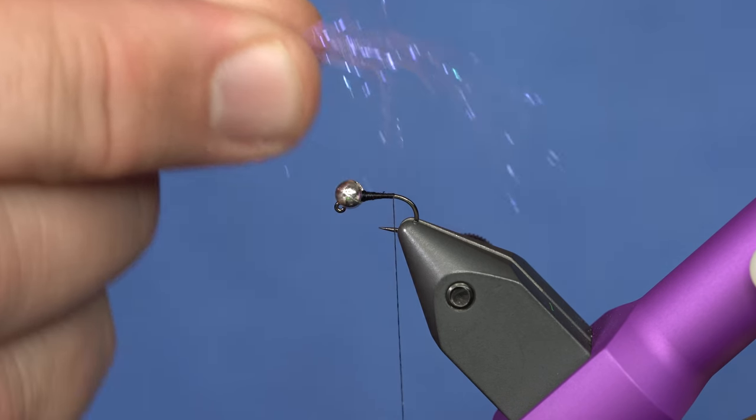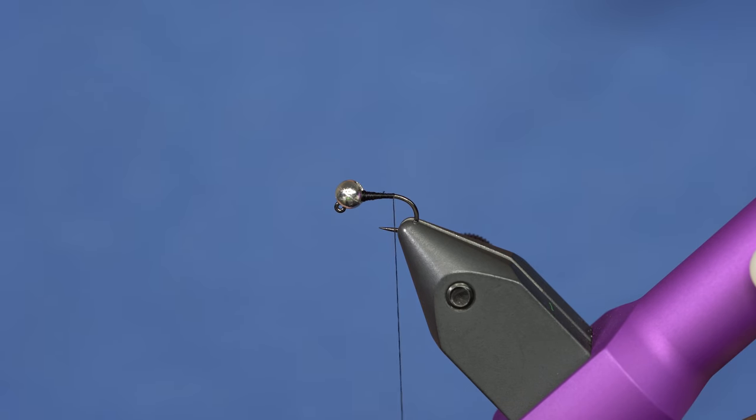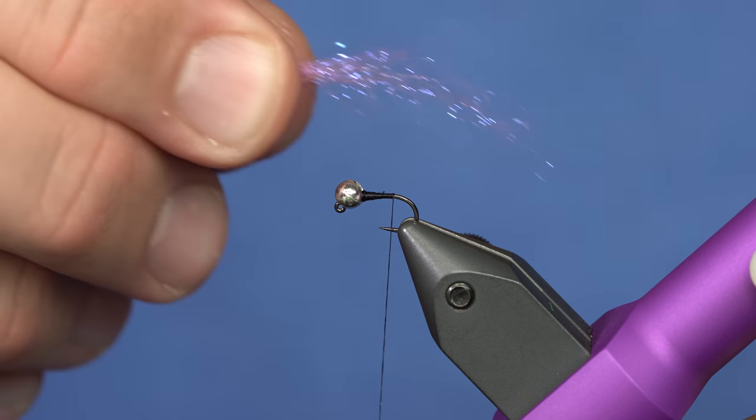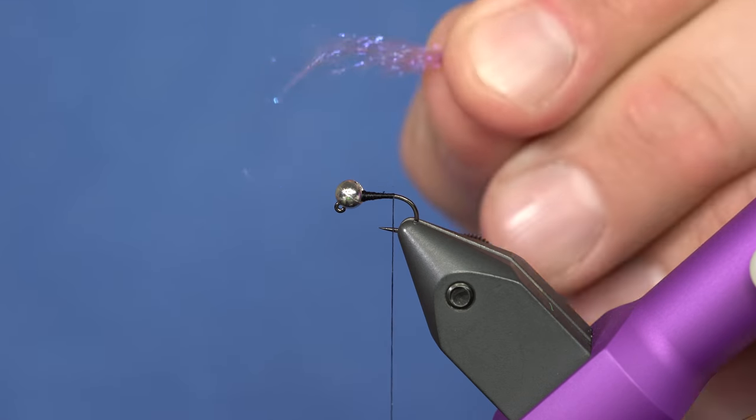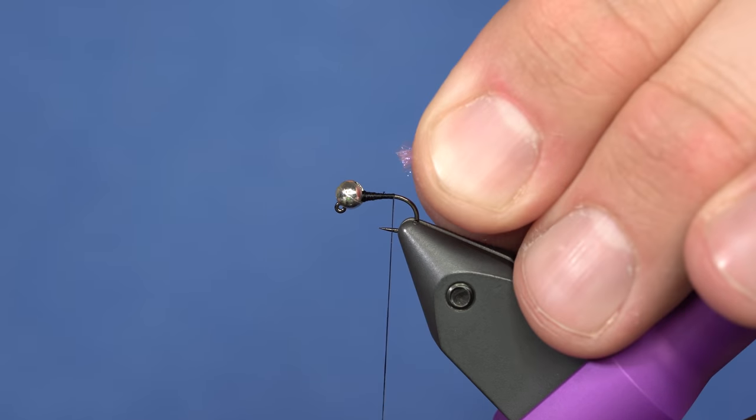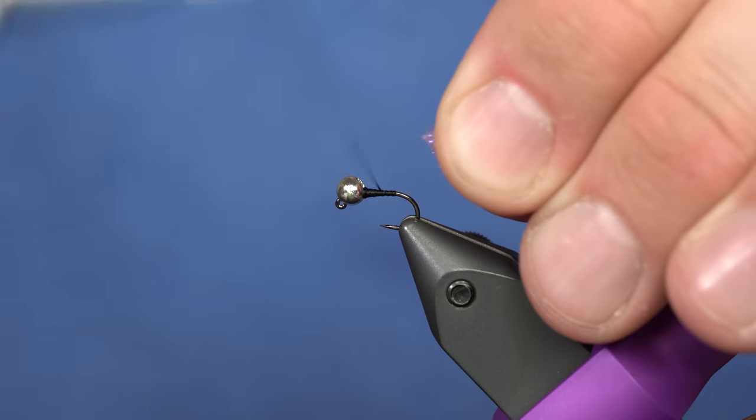I'm just going to pull out a chunk of it. Maybe a little bit more. I want it to be somewhat thick. About like that. And I'm going to take one side of that and just trim it. So that's going to be my tie-in point.